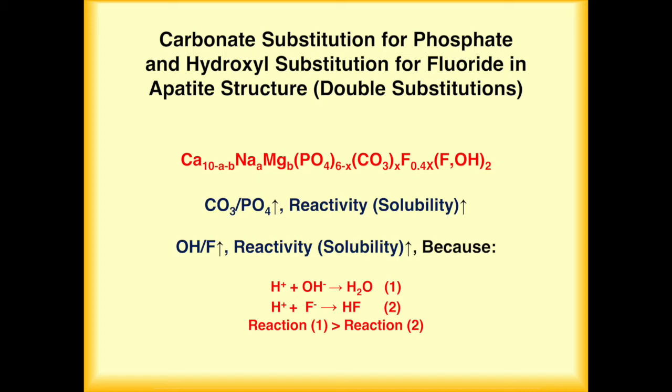So if you look at the calcium, sodium, magnesium, PO4, carbonate — the same. Fluoride at 0.4X. Normally you should have two moles of fluoride, but hydroxyl can substitute fluorine along with carbonate substitution for phosphate. So this is called double substitution, and this has happened exactly with bioviral phosphorus.